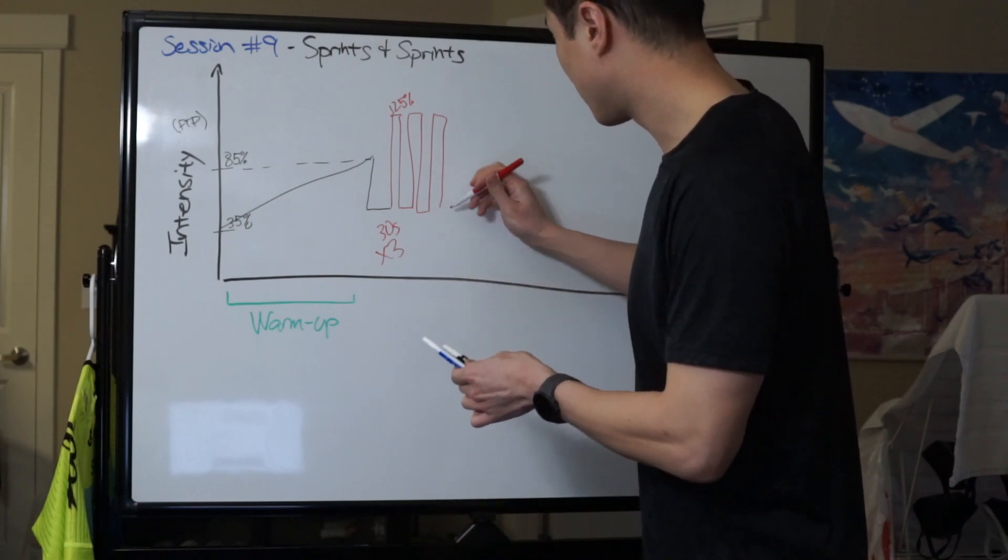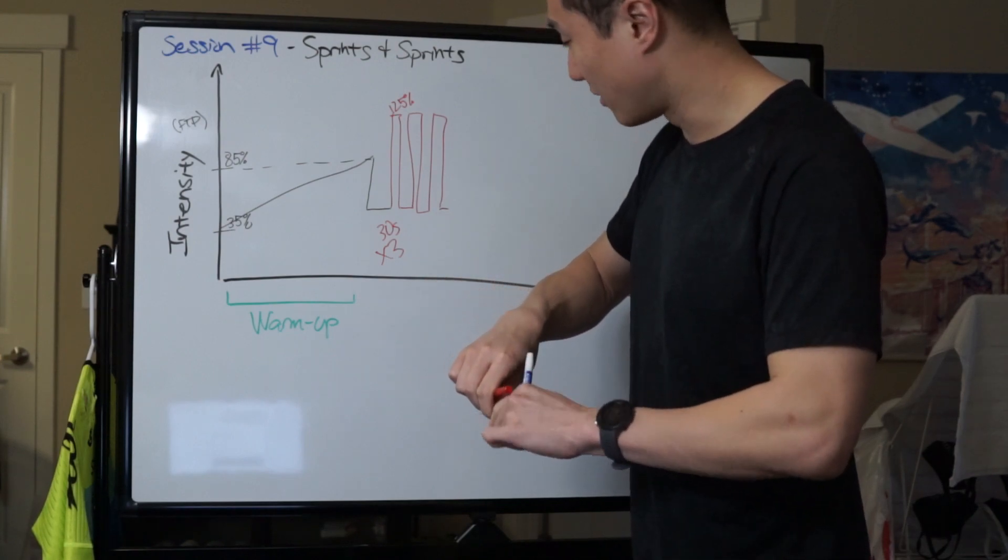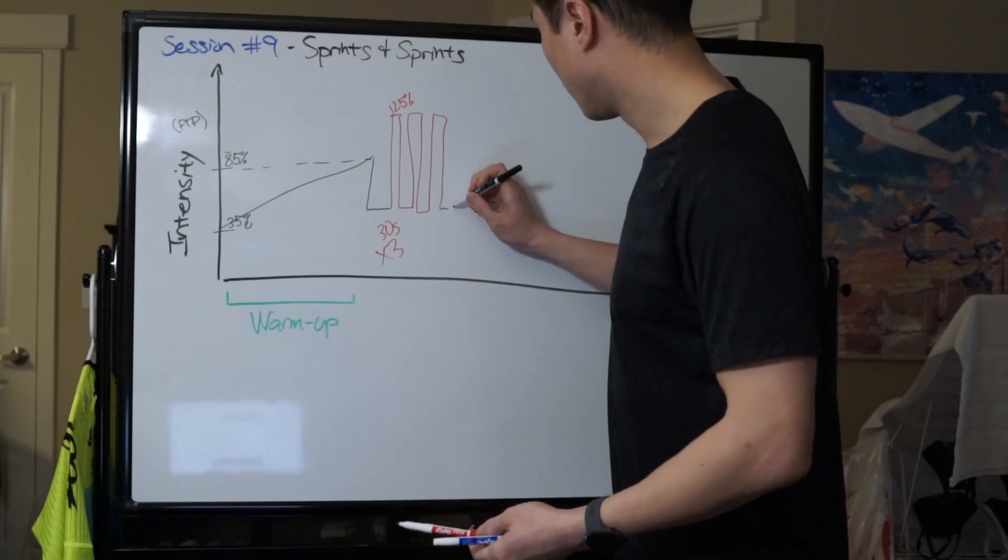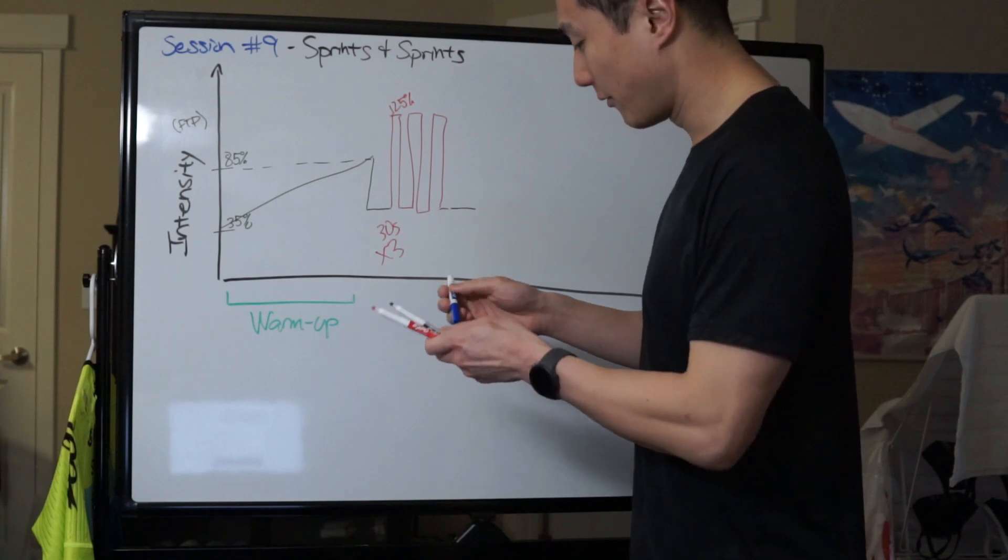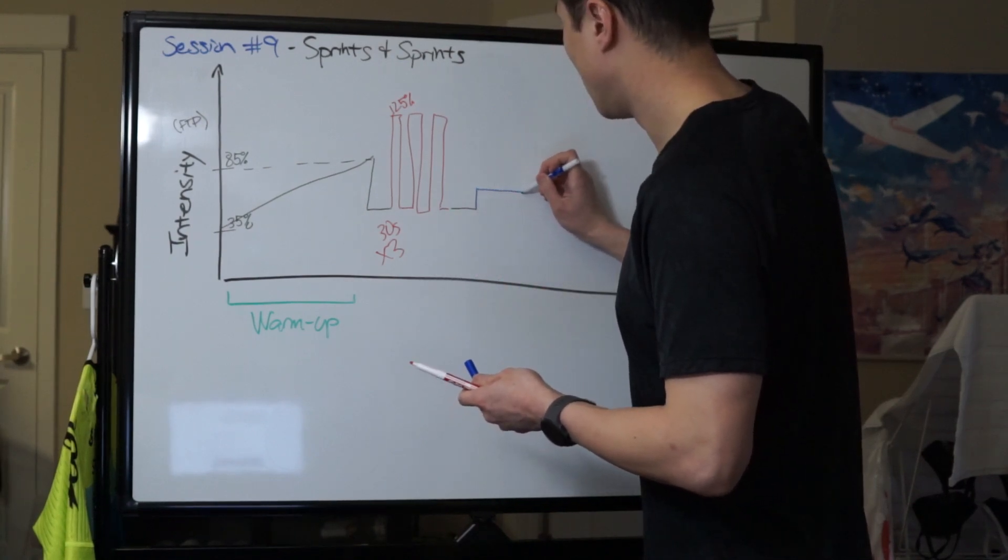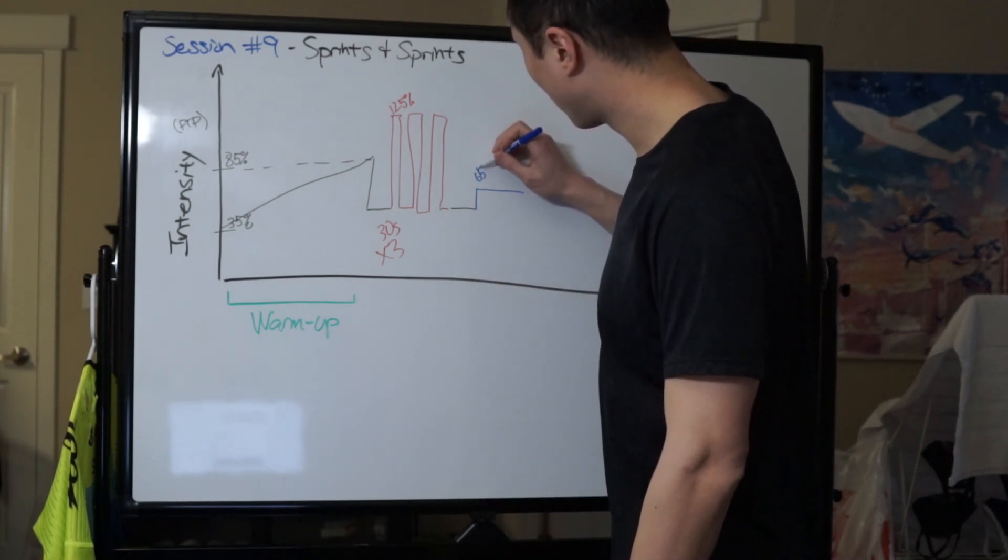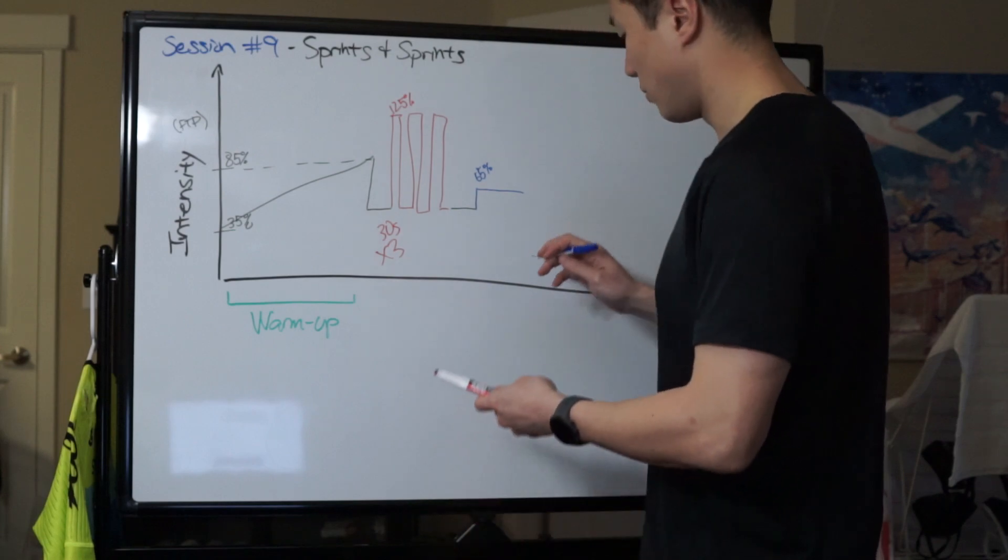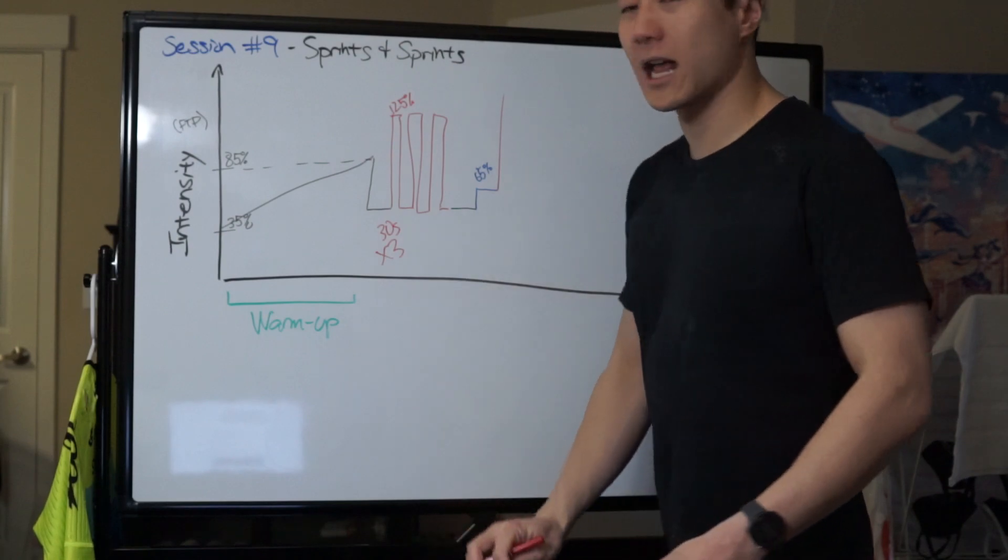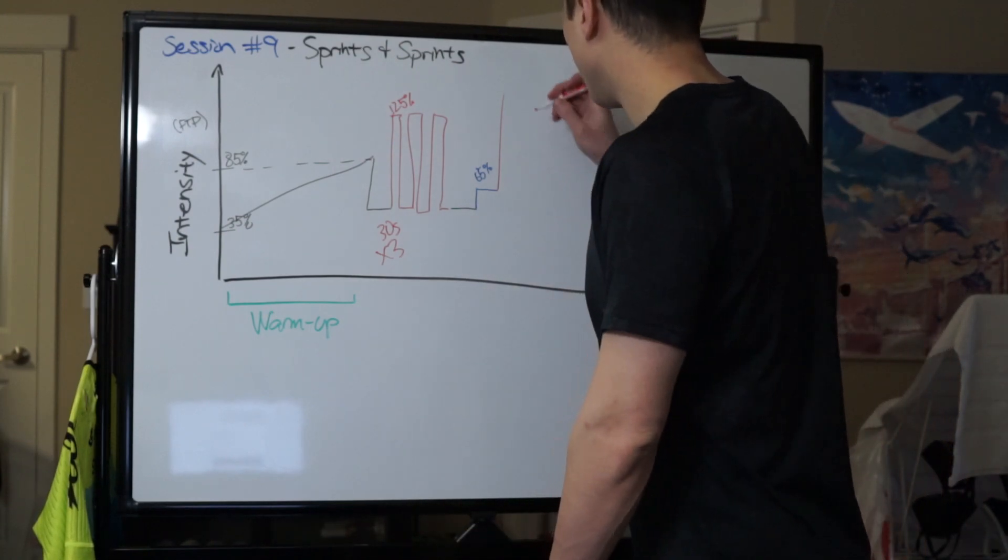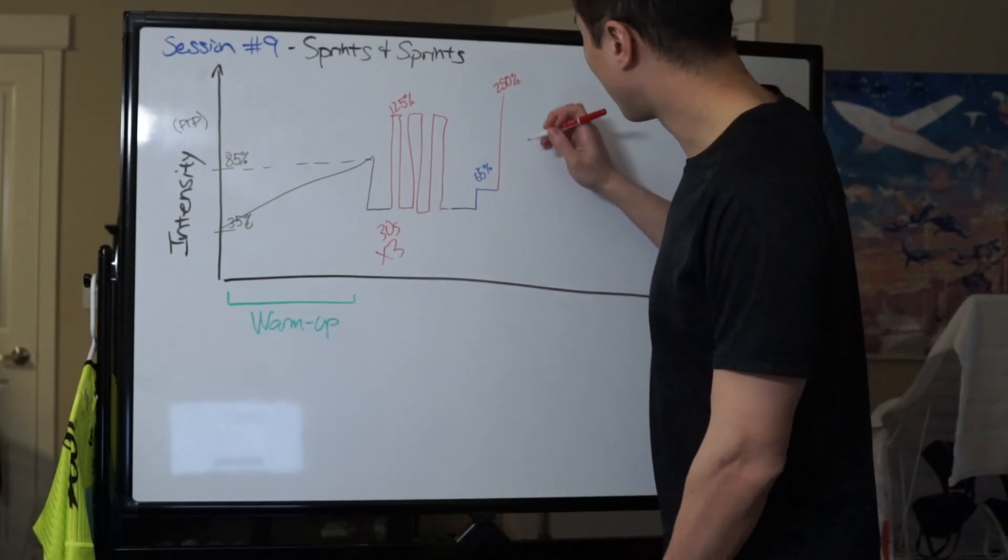Then we'll have a little bit of recovery. We'll do a little bit of recovery at about 60-65 percent of power for about two minutes, and then we're going to ratchet up the intensity. The level here is 250 percent and we're going to do this for 15 seconds.